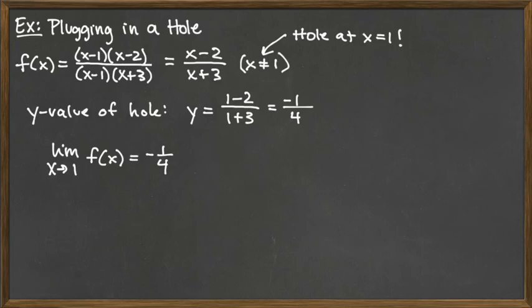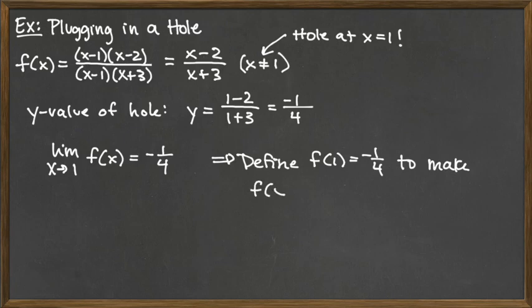That's the y value of the hole. And so what we could do is we could define f of 1 to be that y value of the hole that we would have at 1. And that would make the original function f continuous at x equals 1. So we would define f of 1 equals negative 1/4 to make the original function f of x continuous at x equals 1.